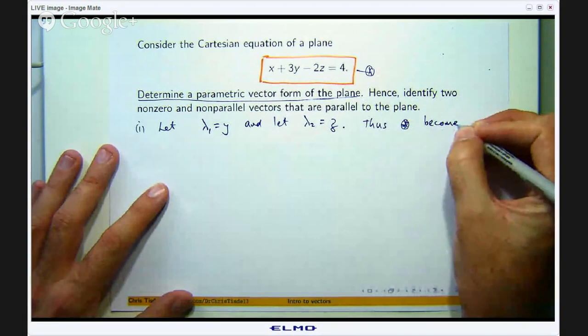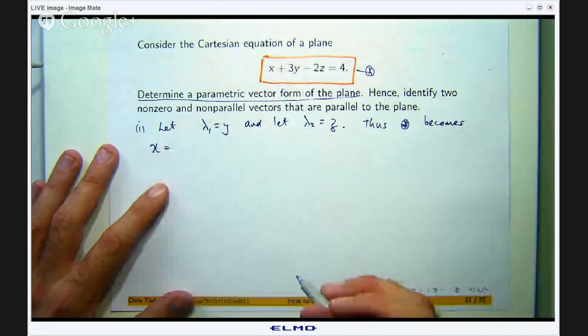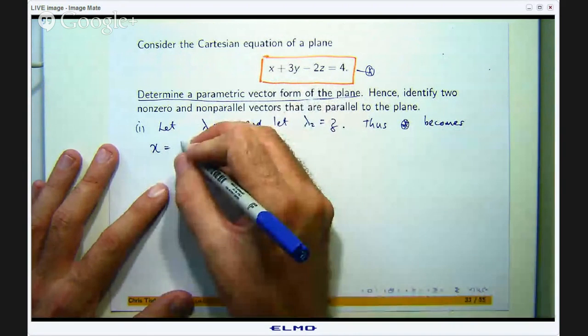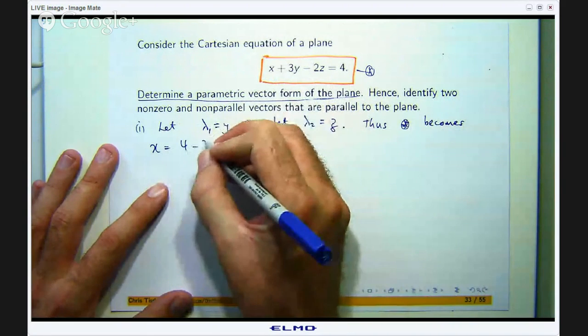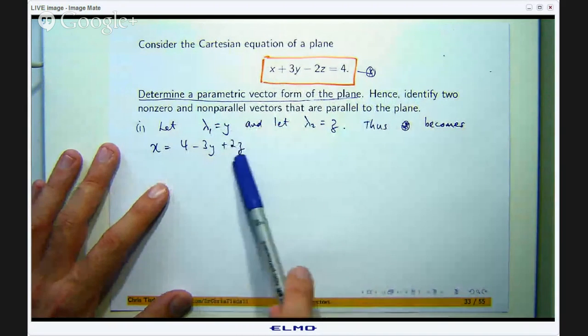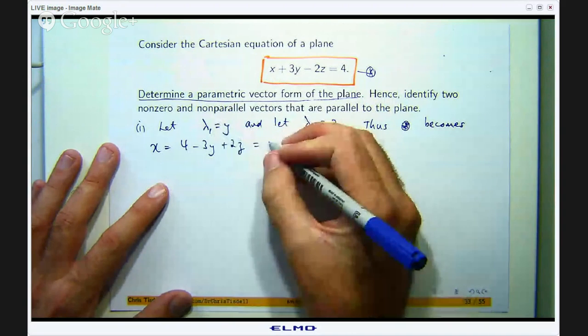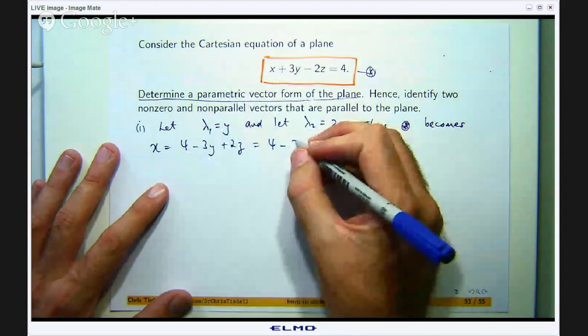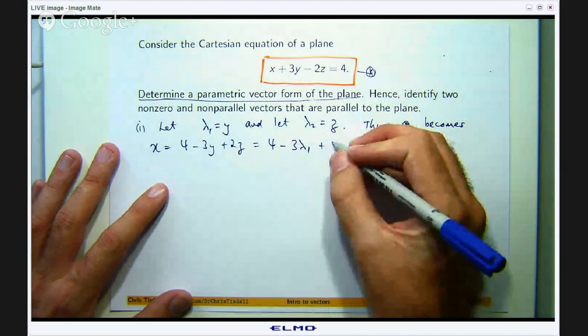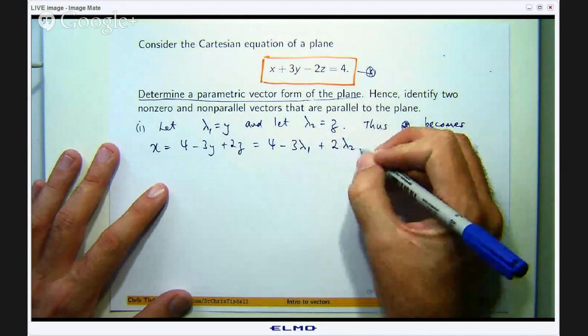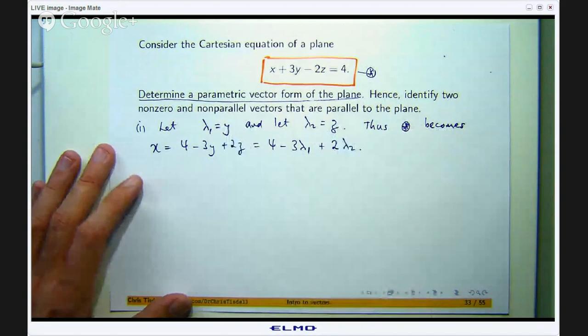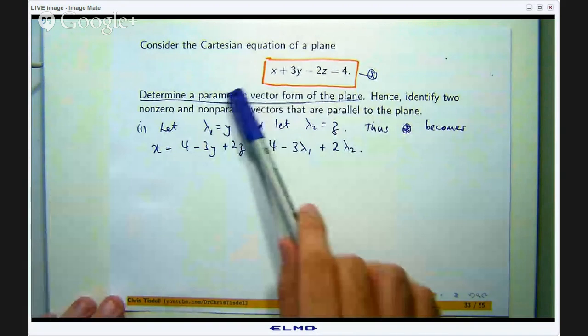Let us rearrange that and make x the subject. So if I do that, let us say I move the 3y and the negative 2z to the other side. And what I am going to do is express these in terms of the λ1 and the λ2. So 4 minus 3 times λ1 plus 2 times λ2. So let us take these, the x, the y and the z and write them as a vector because we are looking for a parametric vector form here.